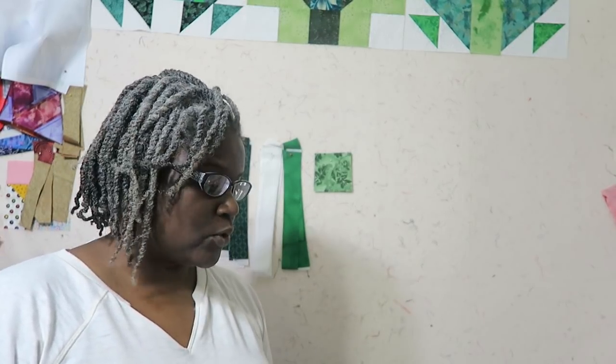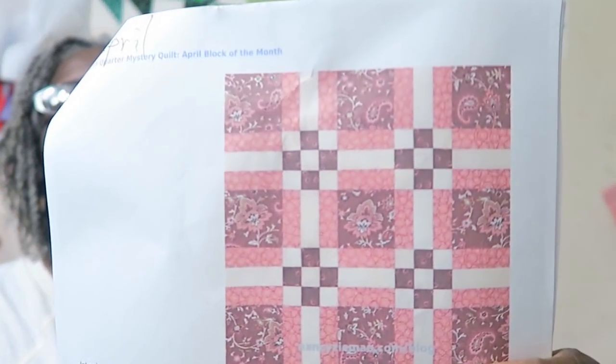Hi it's T with T Quilts and I'm here doing the April 2017 mystery block of the month in my honorary Nancy Zeman quilt. This month the block is called the ablam quilt and this is how the block looks.